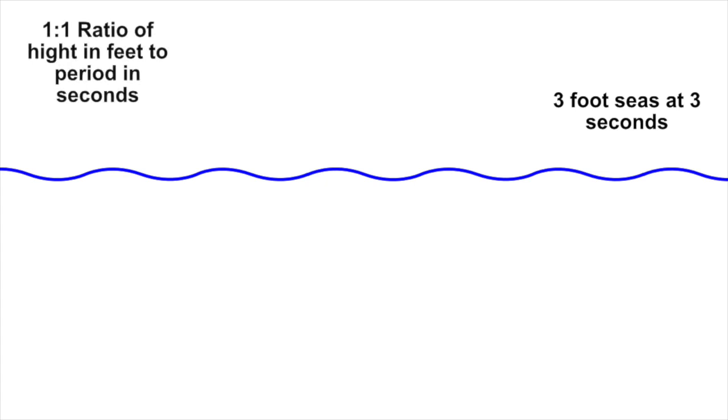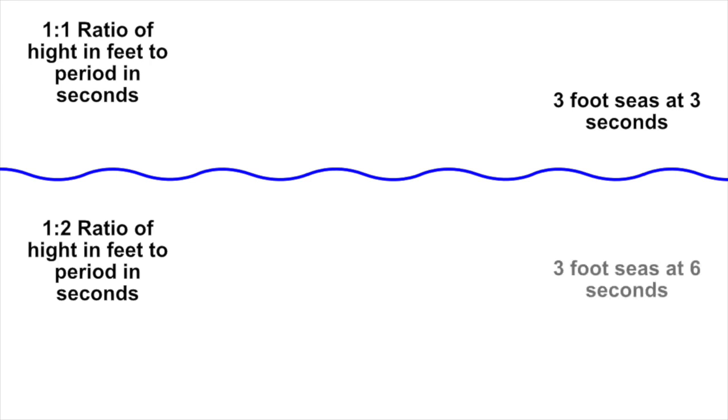I'm going to start with a 3 foot wave at 3 seconds. This is a 1 to 1 ratio between the height in feet and period in seconds. This is typically referred to as a square wave and is usually not very comfortable and I'm going to demonstrate why. I'm going to contrast that with a 1 to 2 ratio of height in feet to period in seconds which represents 3 foot seas at 6 seconds.